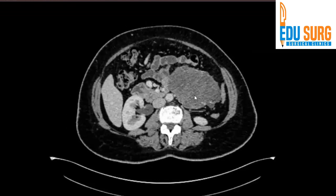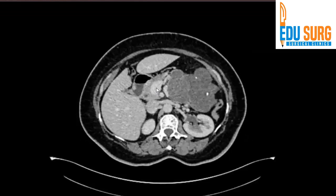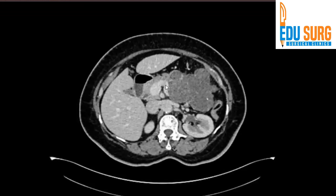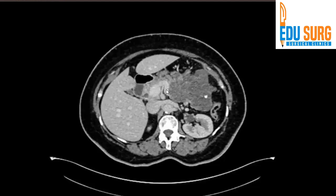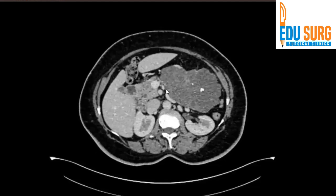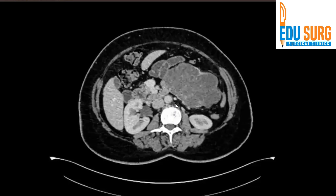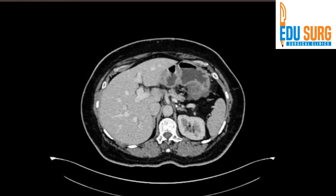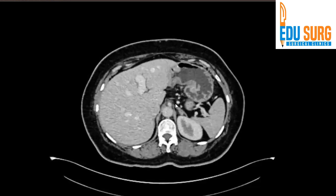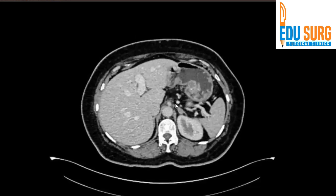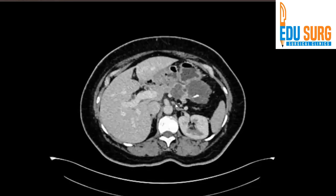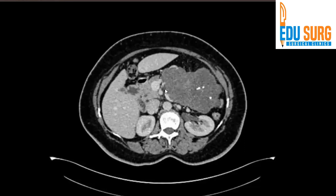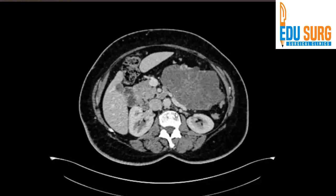There is a hypodense lesion. This is the portal phase — you can see the portal vein and the superior mesenteric vein, with the intrahepatic portal vein going down. This is the splenic vein. It is very important in this patient to trace the entire splenic vein, because if the splenic vein is involved by the tumor, we cannot do a spleen-preserving distal pancreatectomy with vessel preservation, which is known as the Kimura procedure. So, this patient would need a Warshaw procedure if the splenic vein is involved.